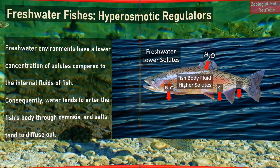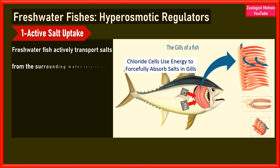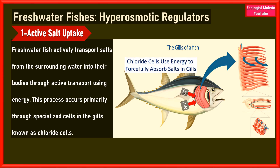To counteract these processes, freshwater fish have developed several adaptations. Number one: active salt uptake. Freshwater fish actively transport salts from the surrounding water into their bodies using energy or ATP. This process occurs primarily through specialized cells in the gills known as chloride cells, which use energy to move ions like sodium and chloride against their concentration gradients, maintaining higher internal concentrations of these ions.